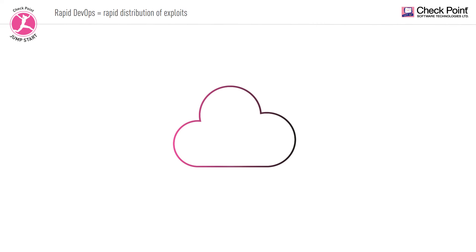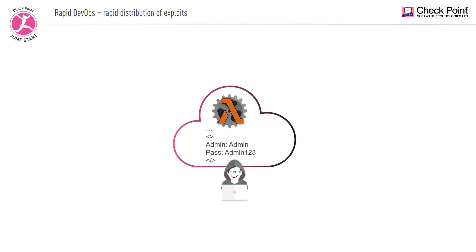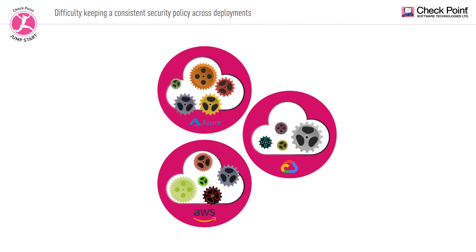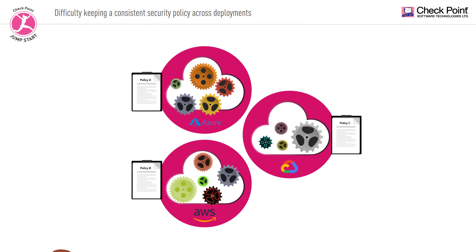The faster than ever pace of the DevOps process around application deployment and server provisioning increases the risk of coding mistakes and exploits being shared automatically in this work culture. This rapid pace leaves little room for errors. In multi-cloud deployments, applications are deployed across multiple cloud providers. Vulnerabilities and mitigations differ between cloud providers, making it a challenge to create a consistent security policy across those deployments.